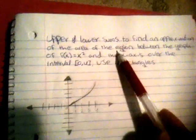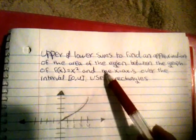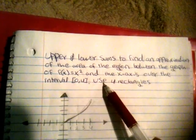Hi everyone, today we will find upper and lower sums to find an approximation of the area of the region between the graph of f(x) = x² and the x-axis over the interval [0,4] using four rectangles.